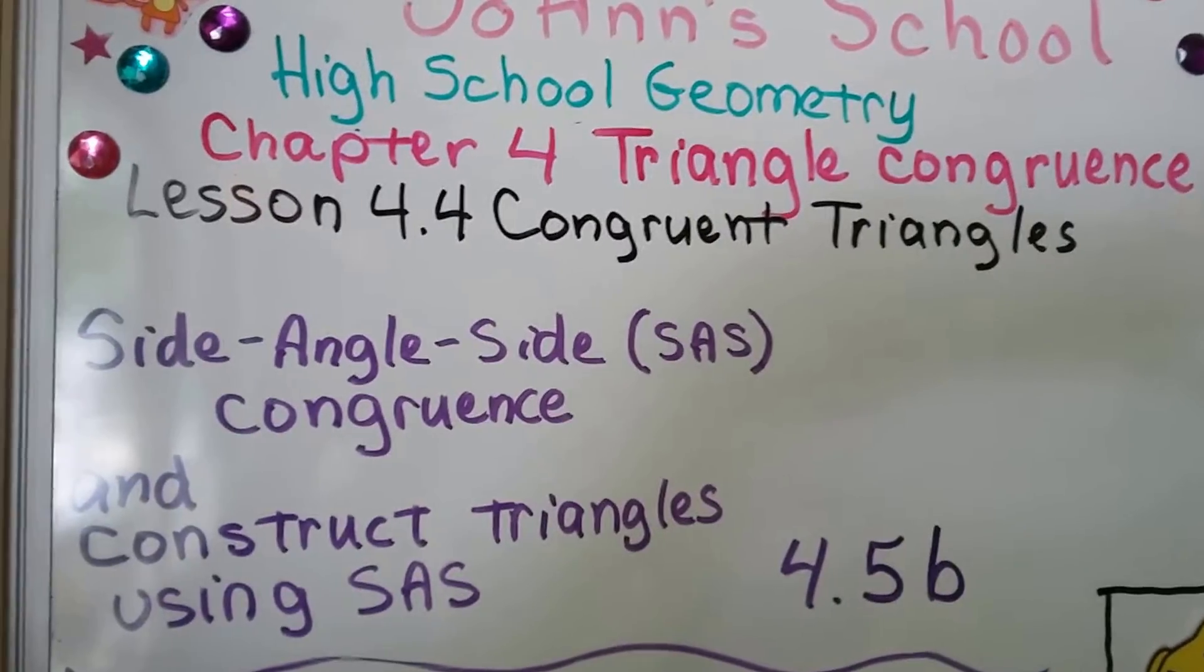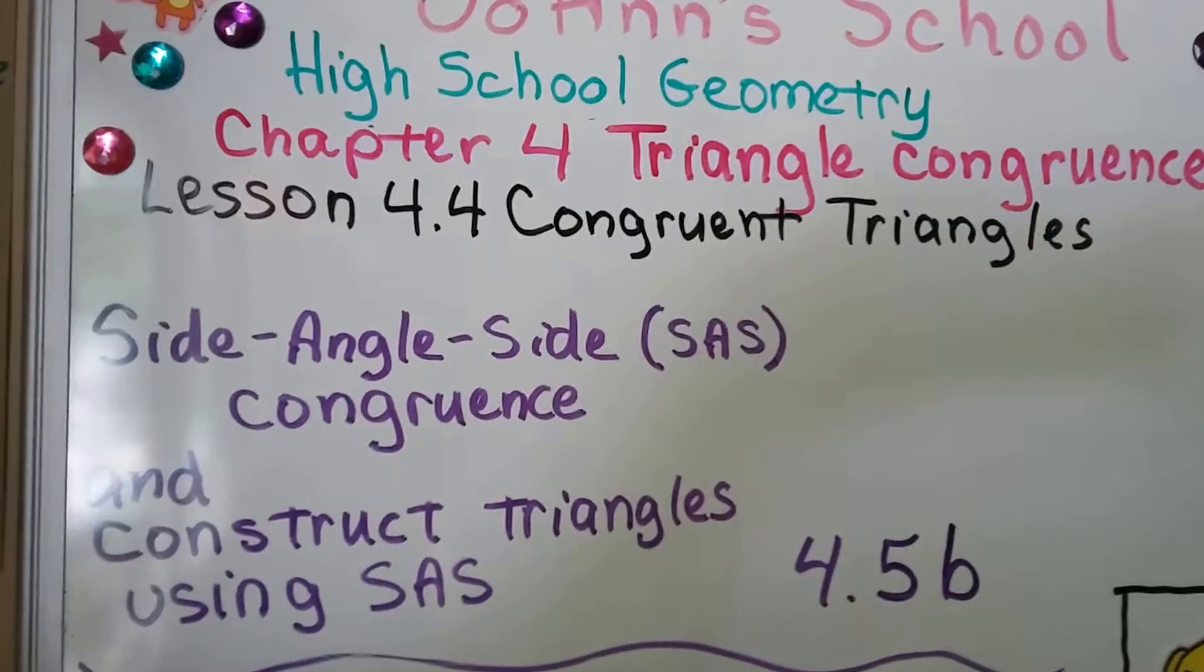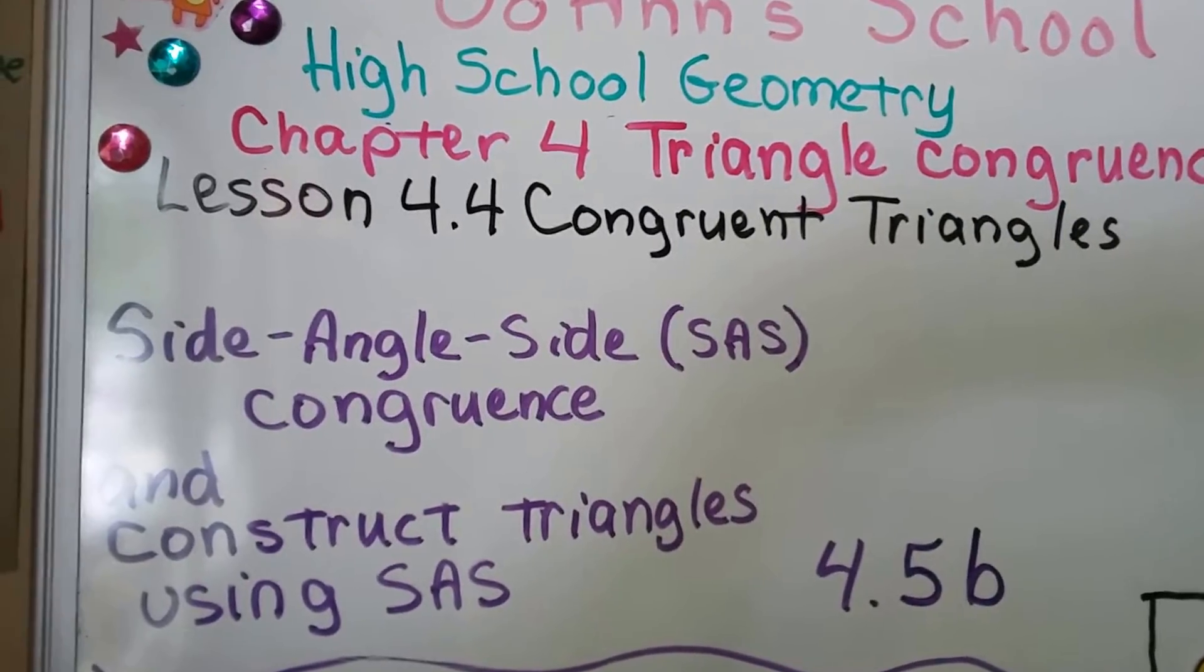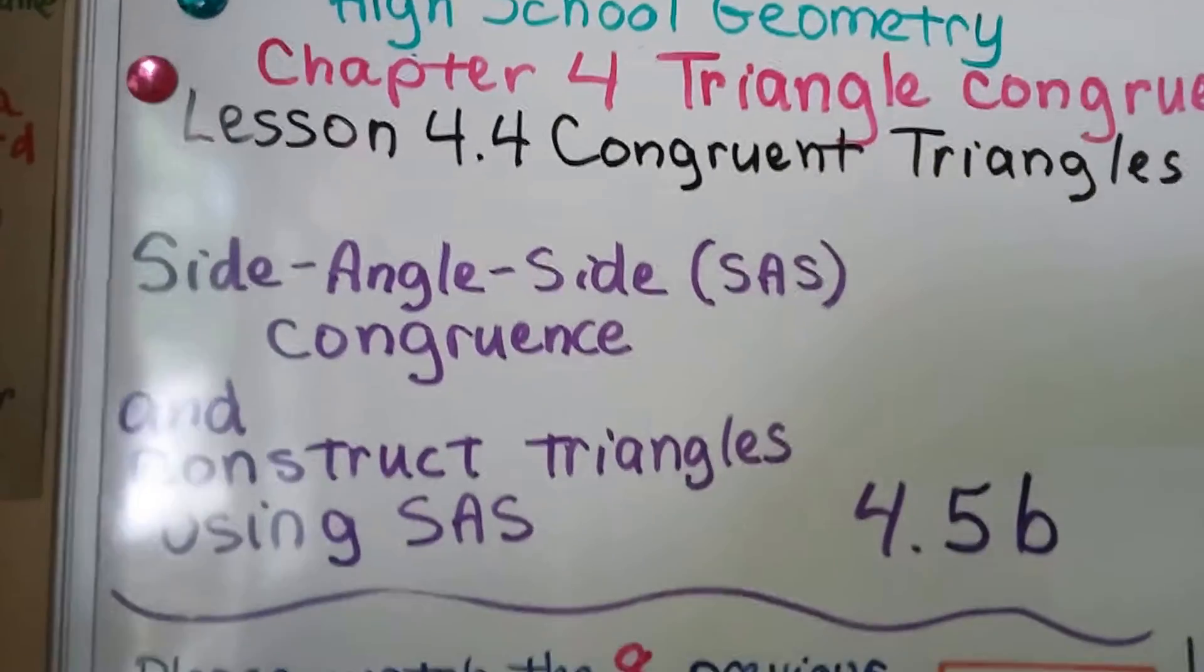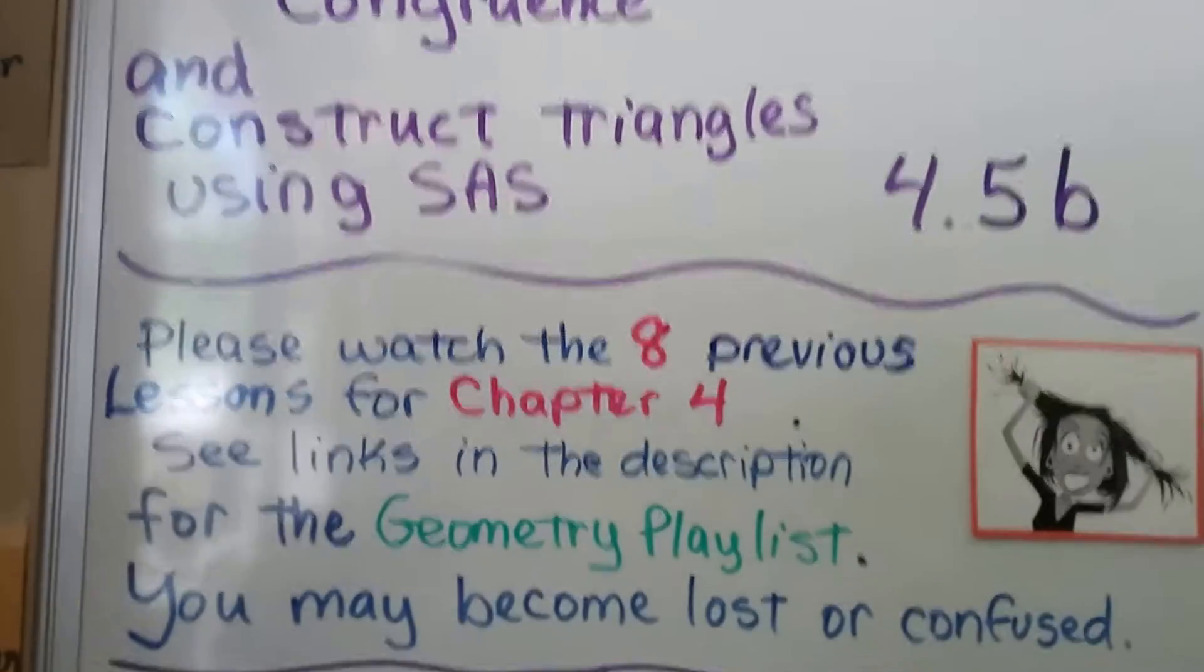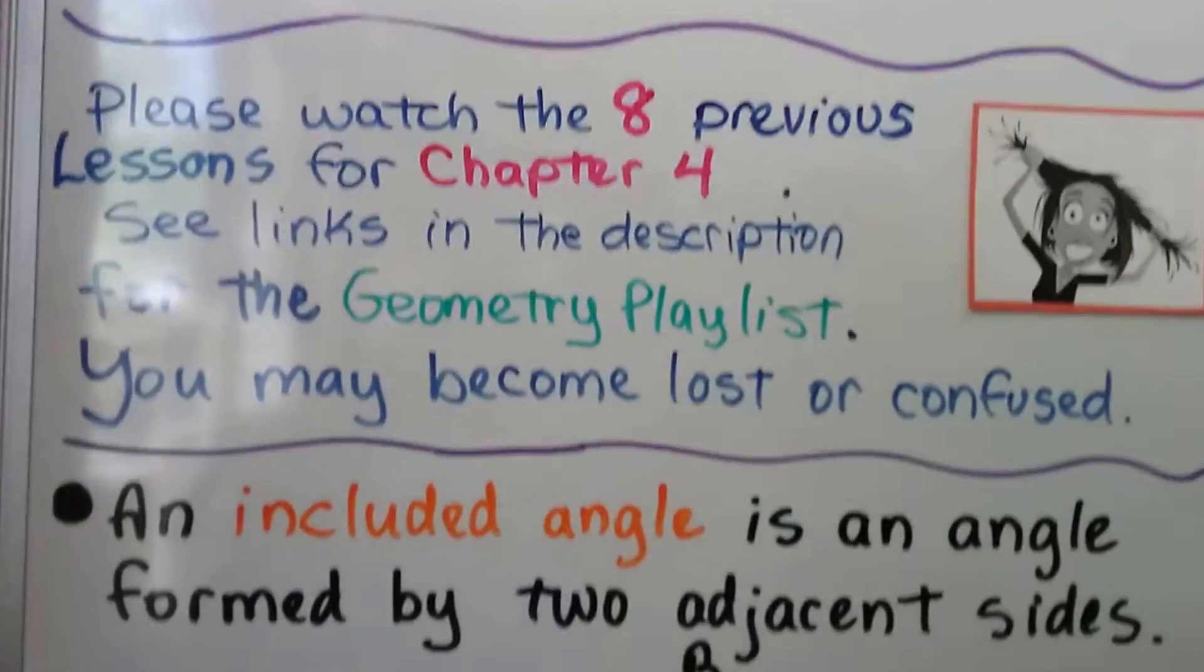Side angle side congruence, called SAS. We're going to construct triangles using SAS. This is 4.5B. We have 4.5A in the last video - if you missed it, it's in the geometry playlist in the description.